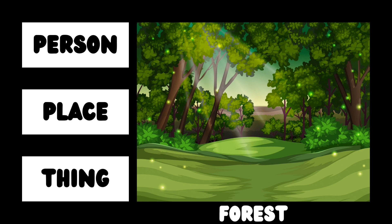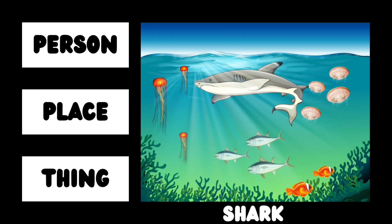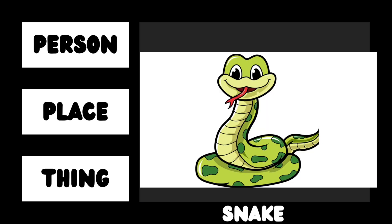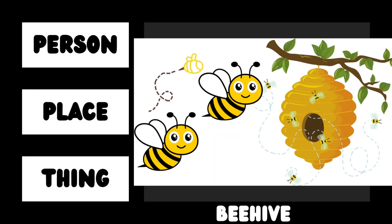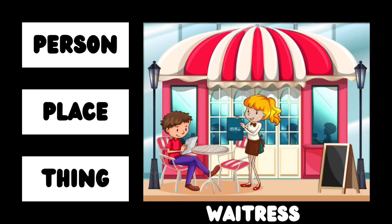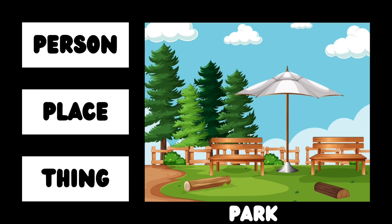It's a forest — forest is a place. It's a shark — shark is a living animal. Snake — snake is an animal. Beehive is a place where bees live. A waitress is a person who serves us at a restaurant. A park is a place where we play.